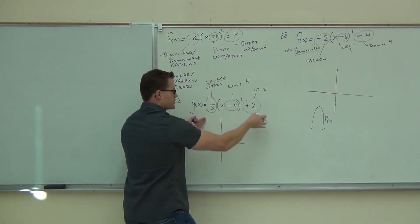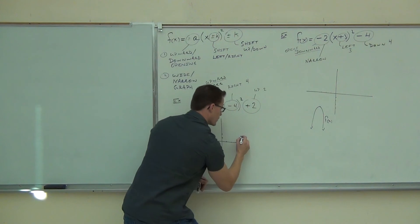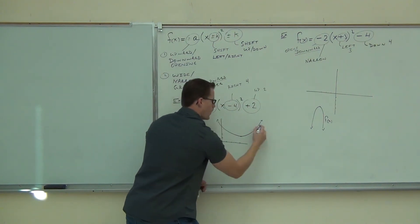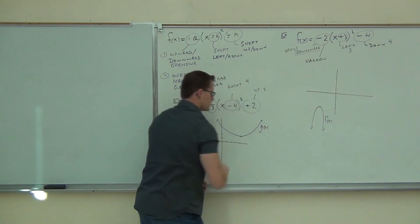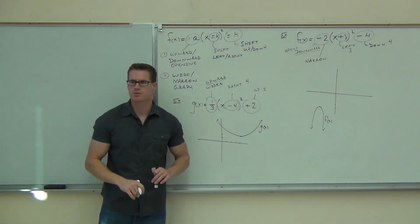It's going to be upward facing this time, and it's going to be wider. So we're going to make a nice, smooth, wide parabola. We'll label it, and that's about what you should have on your paper.